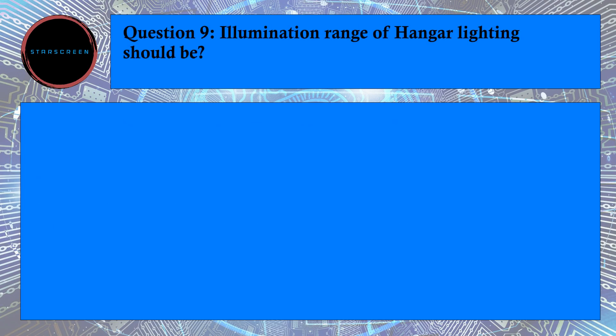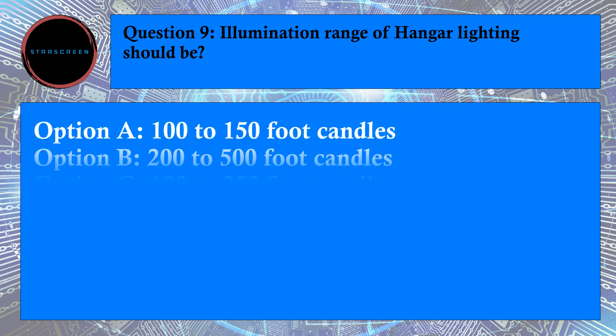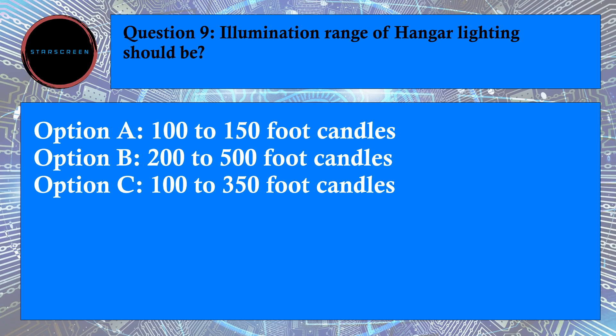Question number 9: Illumination Range of Hanger Lighting should be? Option A, 100-150 foot Candles, Option B, 200-500 foot Candles, and Option C, 100-350 foot Candles. Correct answer is A, 100-150 foot Candles. For answer, refer to ICAO Document 9683, Paragraph number 6.4.27.